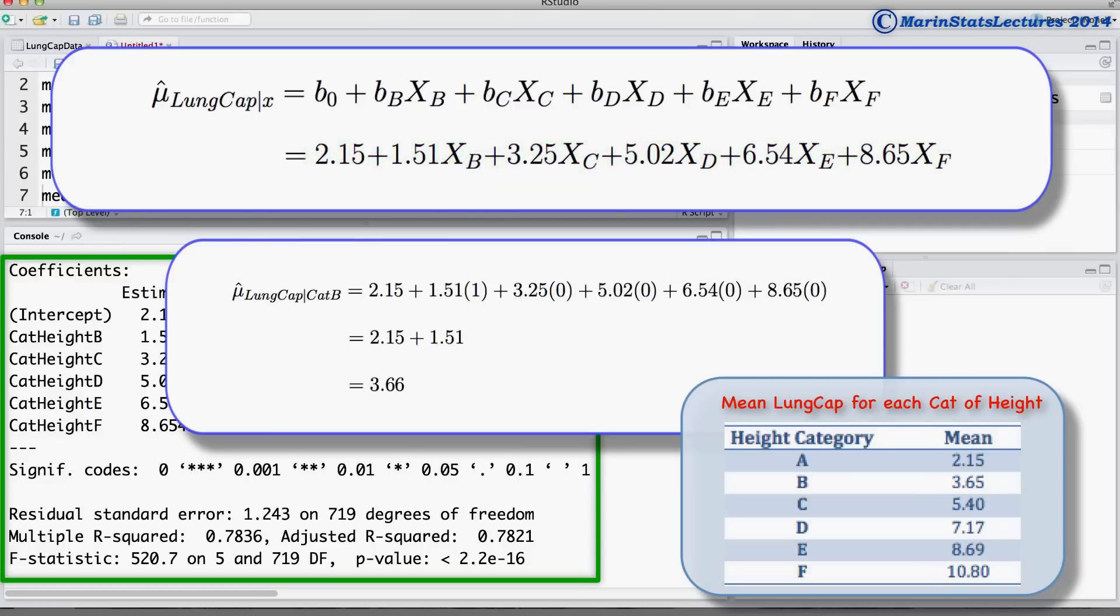The mean lung capacity for someone in category B is 2.15 plus 1.51, which is equal to 3.66. This is the mean lung capacity for someone in category B. The slight difference you see is due to rounding error.